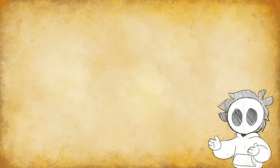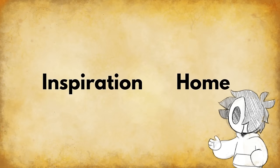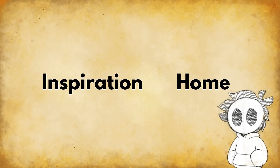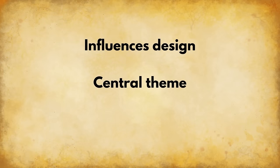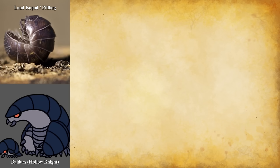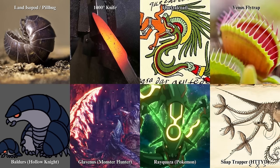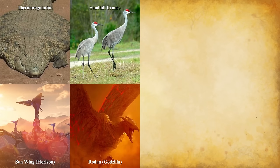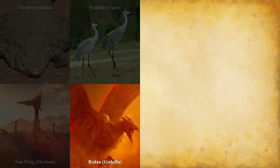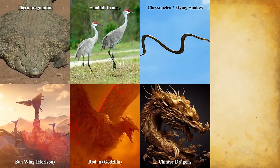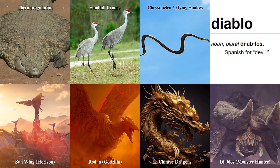Aflatas and abode are fancy words meaning inspiration and home — common starting points for any creature. Starting with inspiration will dictate the design of your creature, give it a central theme, and relay unspoken information to your audience. There are many things your creature can be inspired by: real life animals, weapons, myths, plants. But don't limit yourself to visual inspirations — bodily functions, sounds, and movements are great sources too.